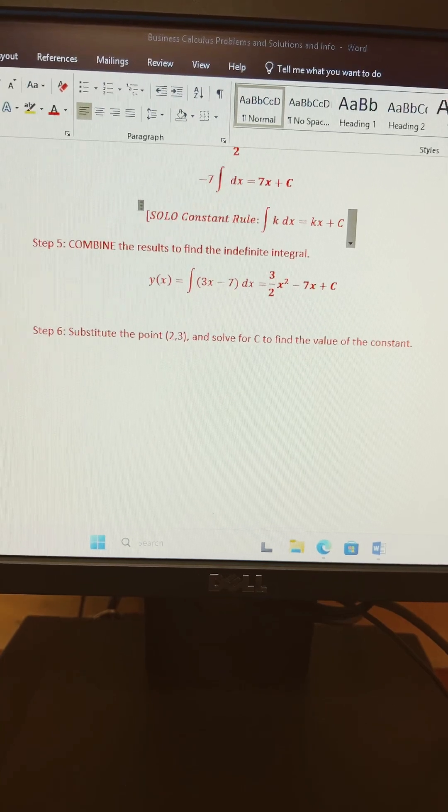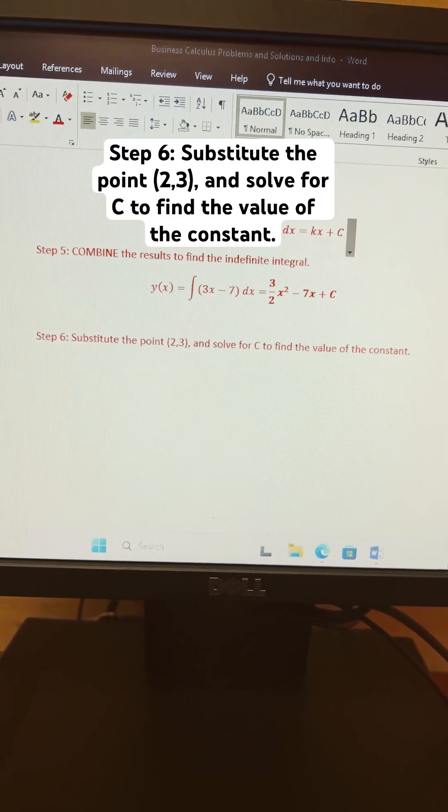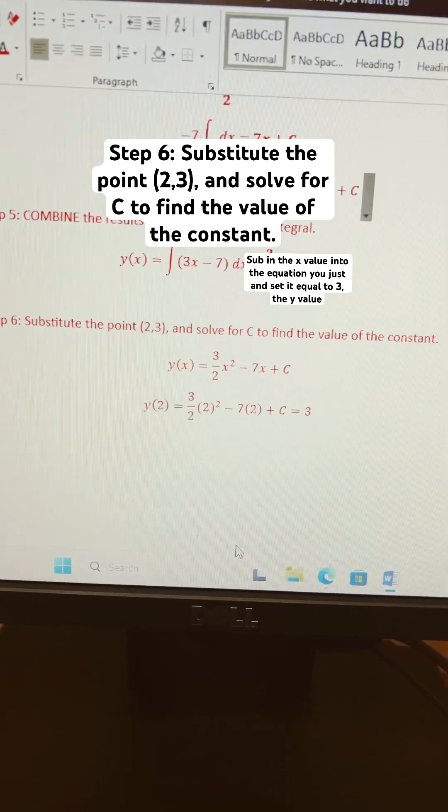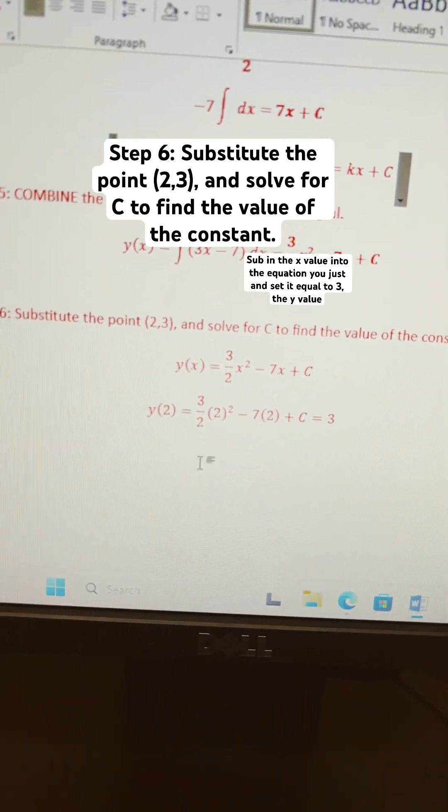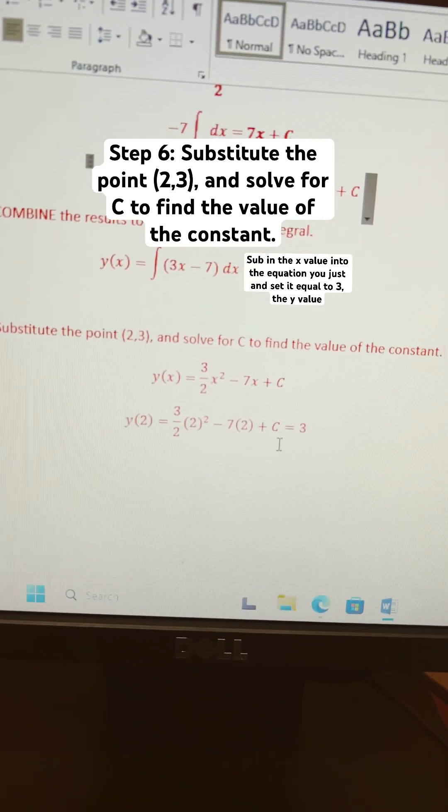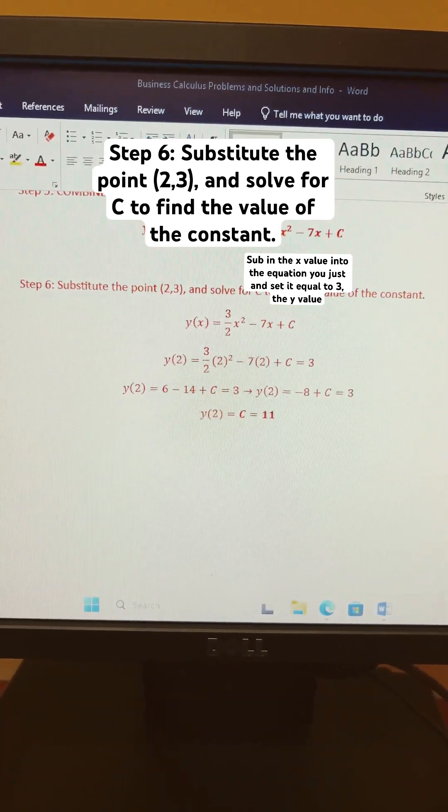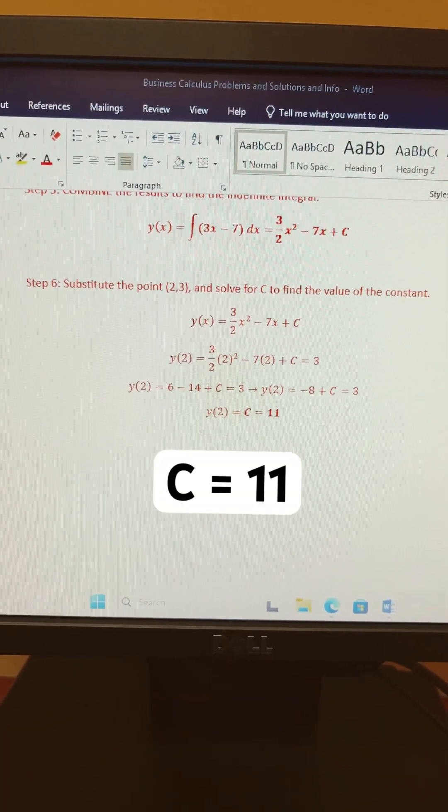Step 6 is to substitute the point (2,3) and solve for arbitrary constant C to find the value of the constant. We sub in the x value into the equation we just got and set it equal to 3, which is the y value. Do this process and you're going to get arbitrary constant C equals 11.